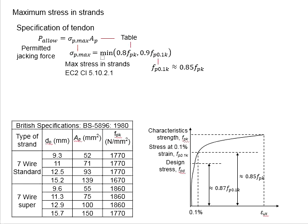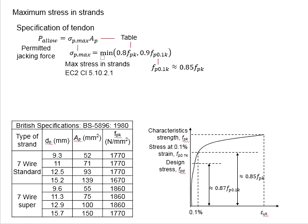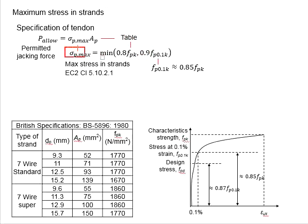To be safe, we limit the maximum stress in the tendon during jacking. We do not use 100% of its ultimate capacity, nor 100% of its yield strength. If quantified by ultimate capacity, we use only 80% of the ultimate capacity. If referring to yield strength, we are only allowed to jack up to 90% of the yield strength. The maximum stress in the tendon will be the smaller of the two.